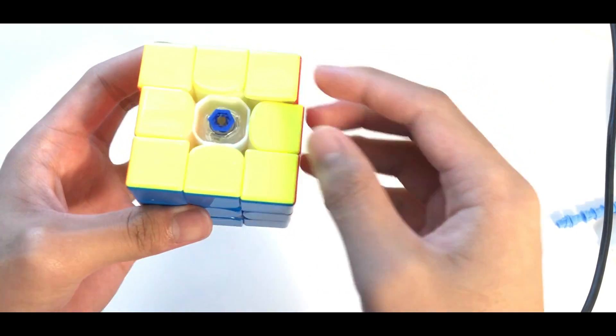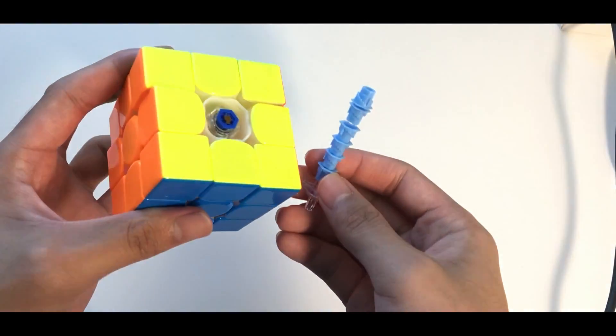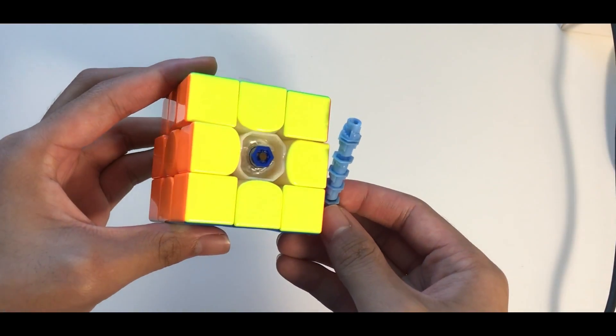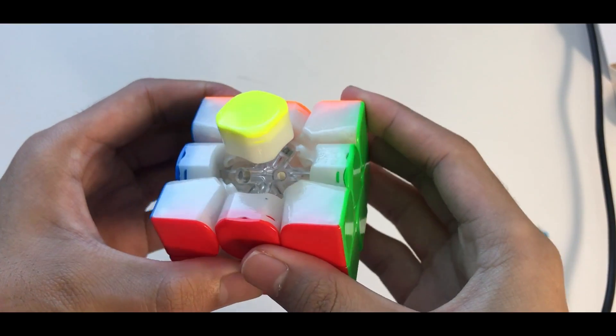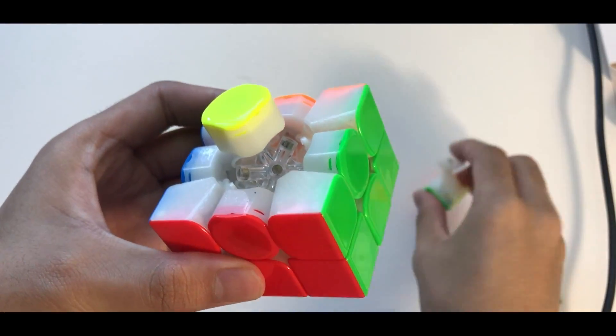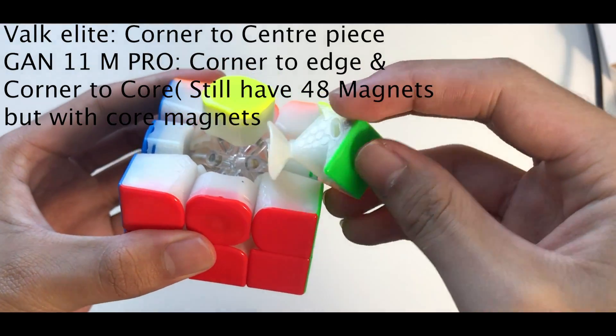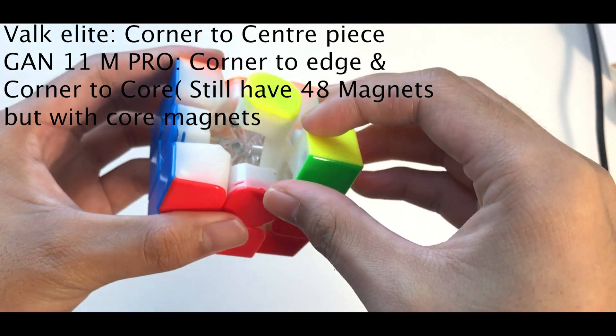This cube does support GAN's new dual adjustment system and this is actually the first ever cube to have core magnets. Basically the magnets are from the corner to edge and corner to core.